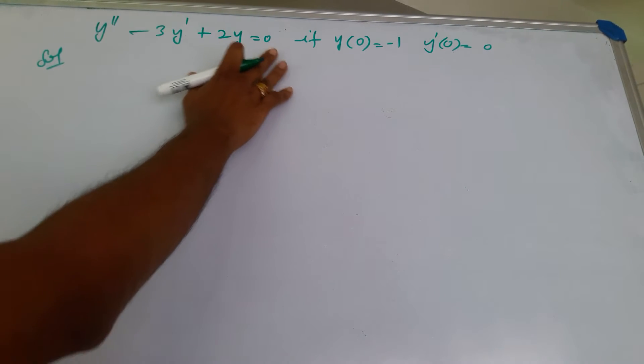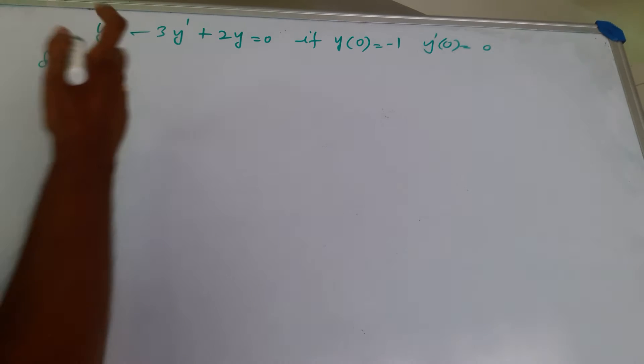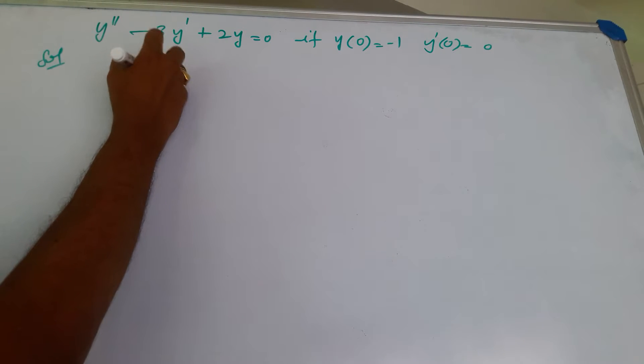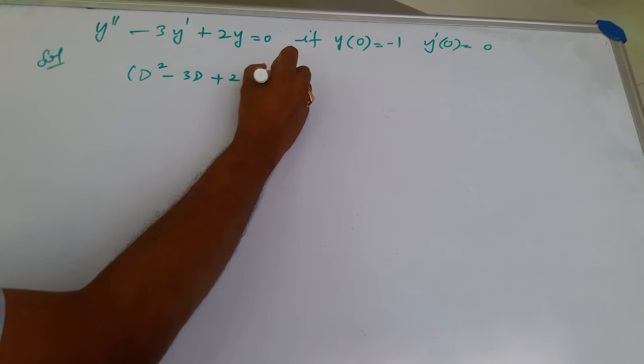This is a second-order differential equation, and it is a homogeneous equation with the initial conditions given. We have d squared minus 3d plus 2 into y equals 0.